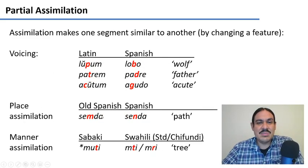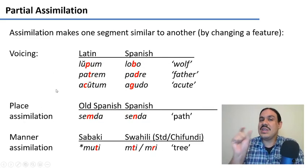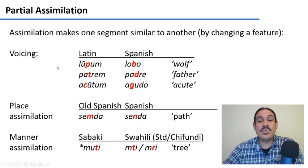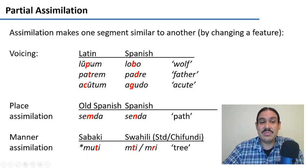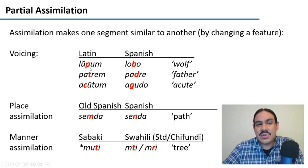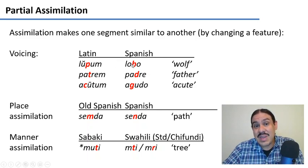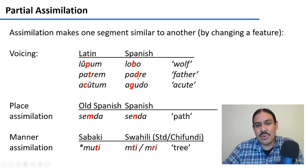We can also have partial assimilation, where you only change one feature, for example voicing. In Latin, you had words like 'lupum', 'patrum', 'acutum', with P, T, and K. These consonants became voiced as Latin transformed to Spanish. We have 'lobo', 'padre', 'agudo', with the voiced equivalents of the voiceless consonants. So the voicing feature changed.